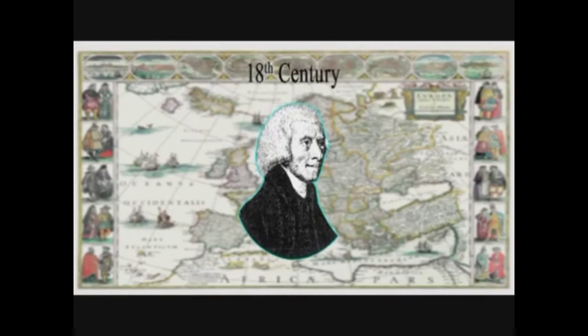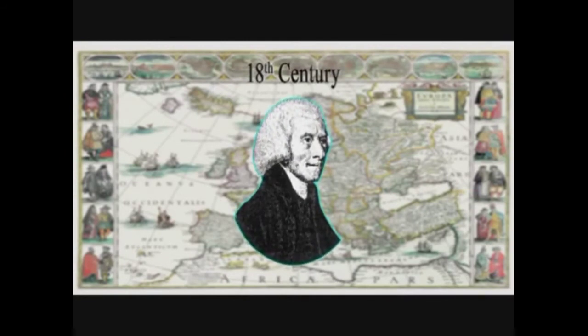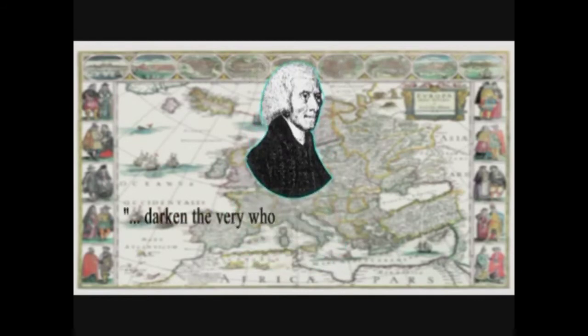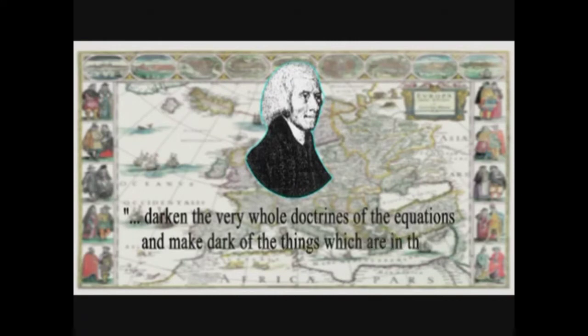Even in the 18th century, the British mathematician Francis Maseres claimed that negative numbers 'darken the very whole doctrines of the equations and make dark of the things which are in their nature excessively obvious and simple.'